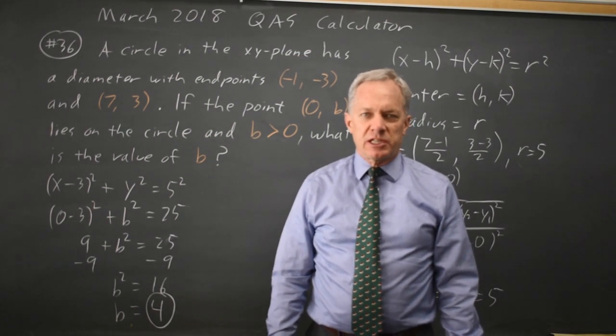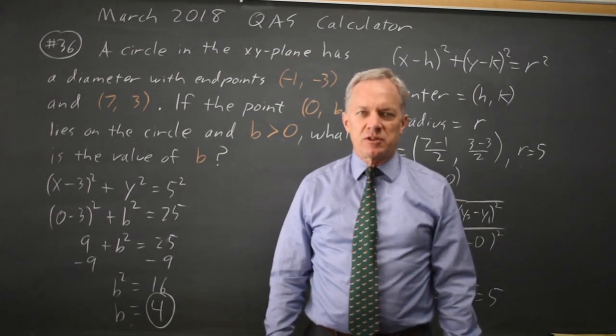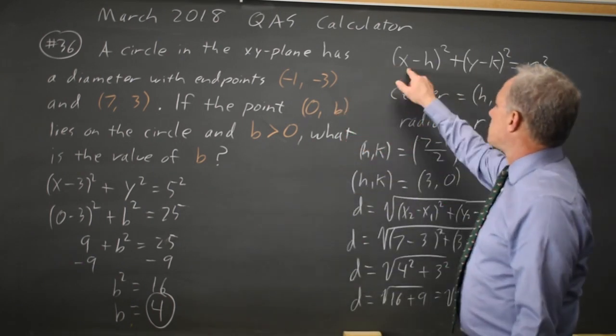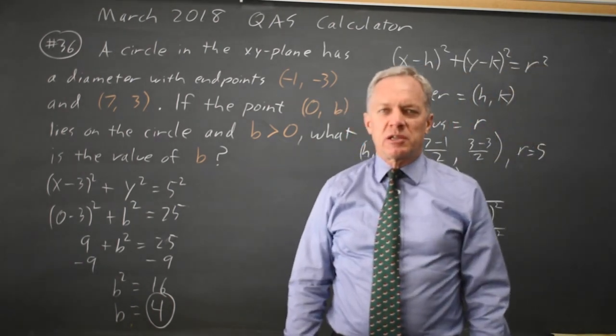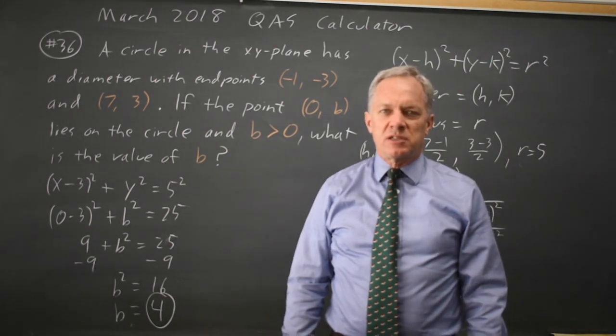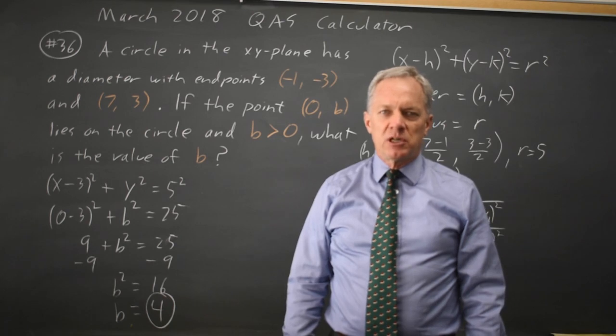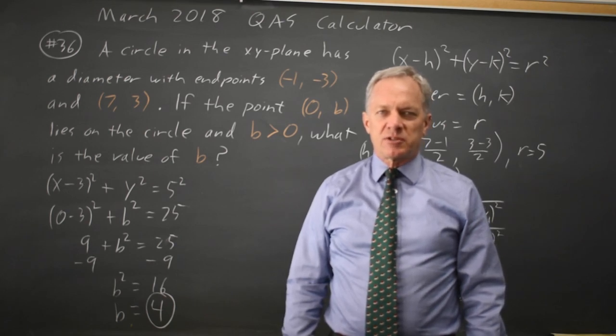The College Board typically asks a question involving the equation of a circle. And I will typically write x minus h squared plus y minus k squared equals r squared before I start thinking about how to solve it, because I usually have to either complete the square to get to that form or interpret that form to answer their question.